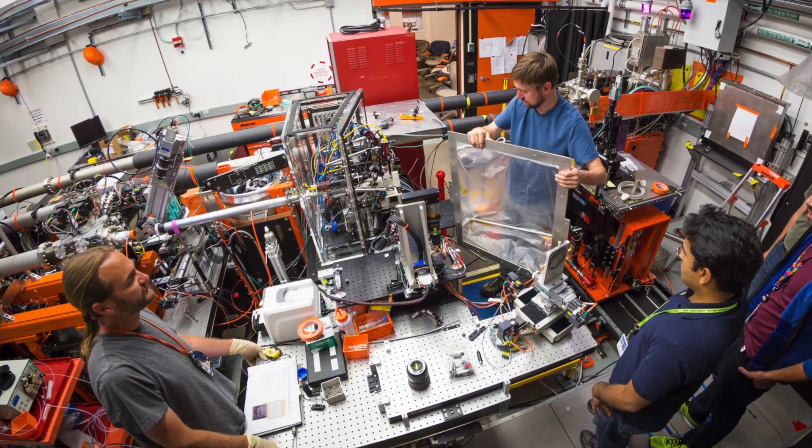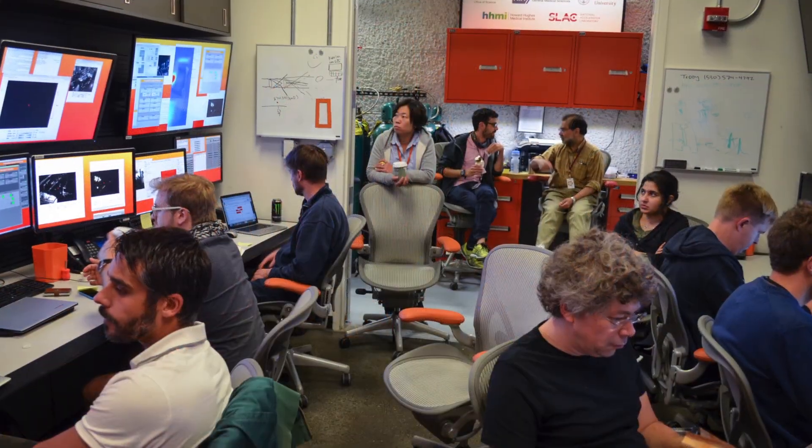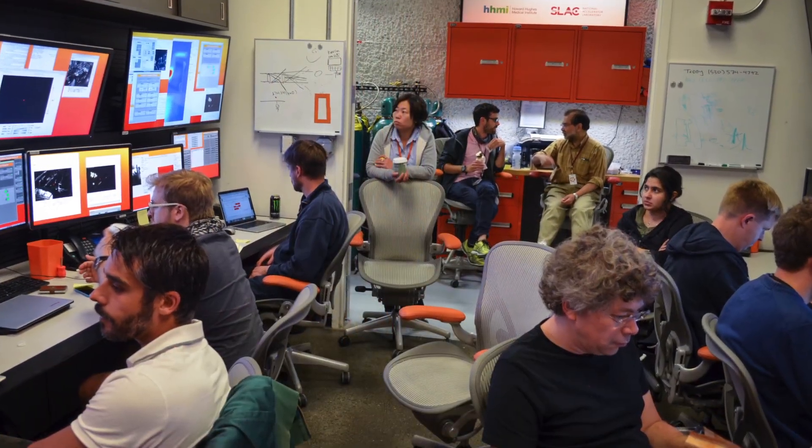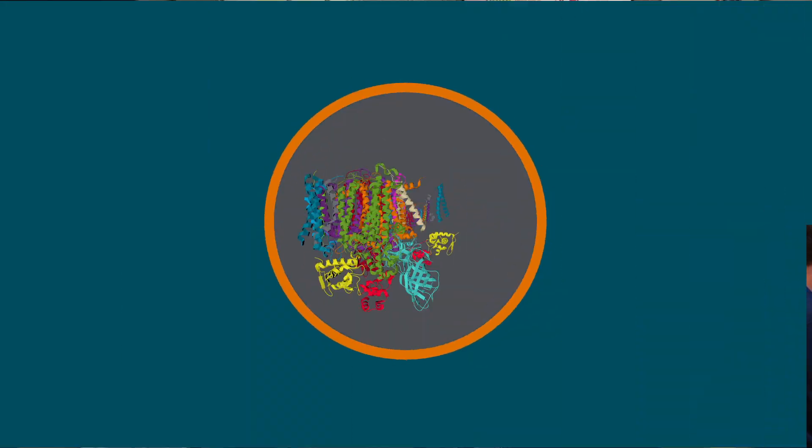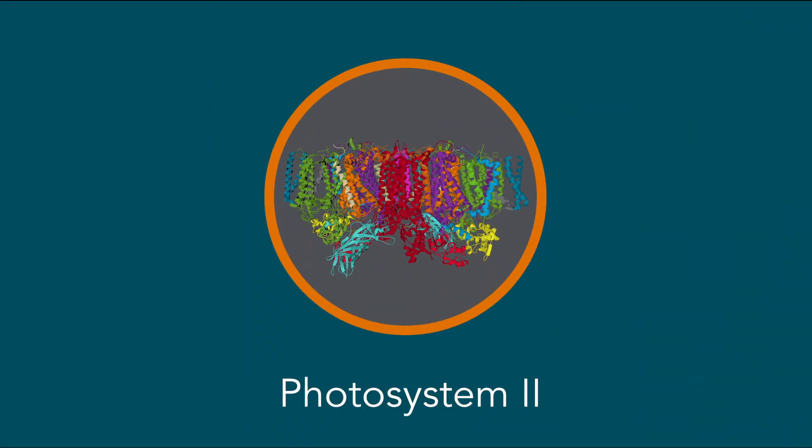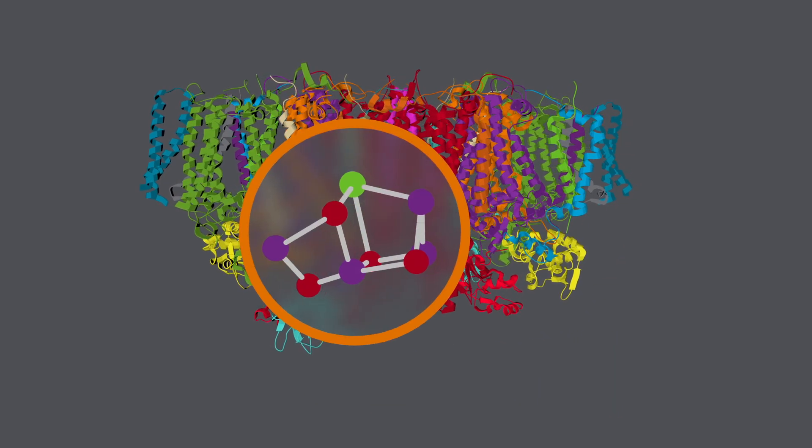These researchers have taken extremely high-resolution images at different stages of the process at room temperature, allowing them to search for how and where the oxygen is produced under real-life circumstances. The researchers specifically studied the protein complex Photosystem II, which produces oxygen from water in a small region of the protein during photosynthesis.